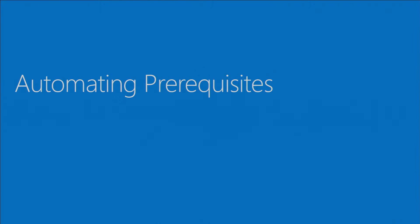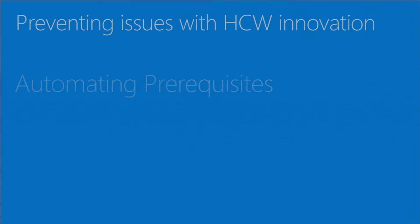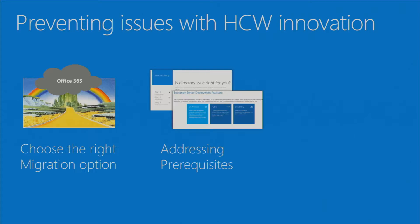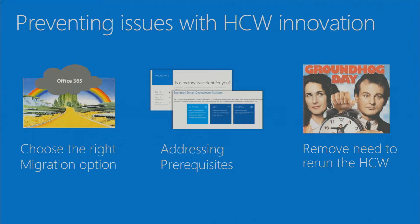What else are we doing in the hybrid wizard? We're automating all the prerequisites. There are a bunch of things you have to do before you get to the hybrid wizard — choosing the right migration option, for example. What we're trying to do is get you to the right migration option. If hybrid's not right for you, we want to get you away from it. If it is right, maybe the minimal one is the one for you.